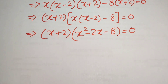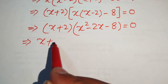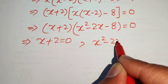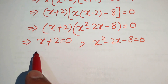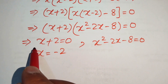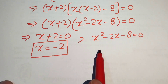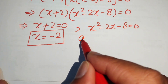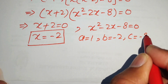We split this into two cases. Case one: x plus 2 equals 0, giving x equals minus 2. Case two: x squared minus 2x minus 8 equals 0. To solve the quadratic, we identify coefficients: a equals 1, b equals minus 2, c equals minus 8.